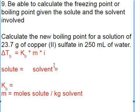Number nine says be able to calculate the freezing point or boiling point given the solute and the solvent involved. It shouldn't matter if I give you the solute in grams and the solvent in grams. You should be able to make the conversions you have to.